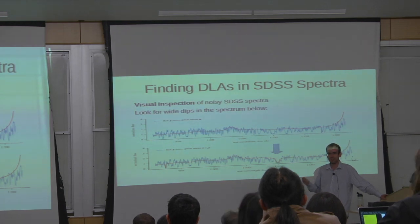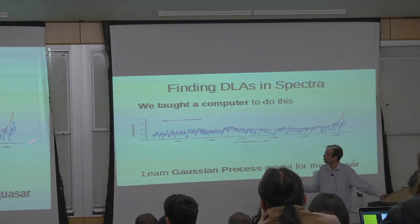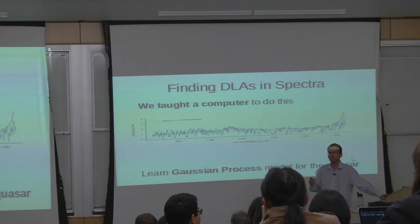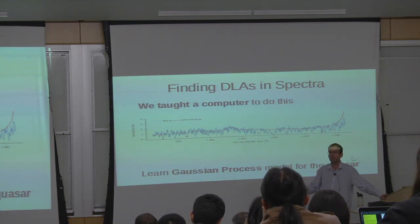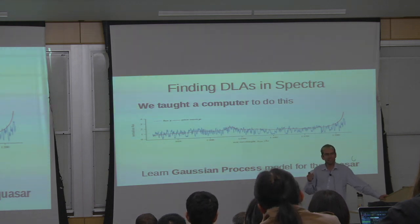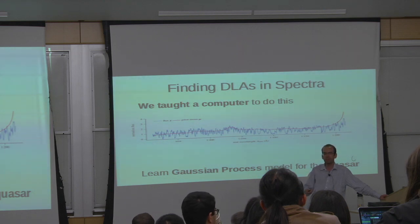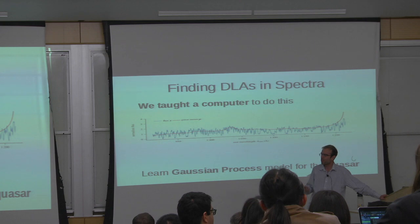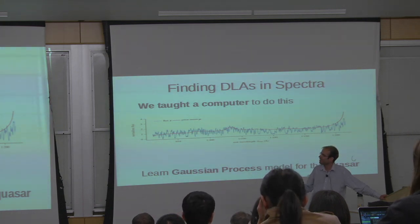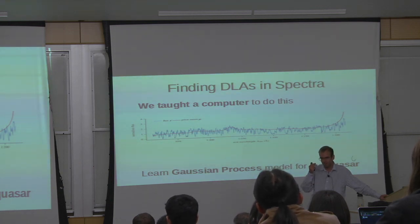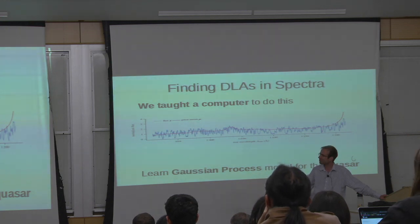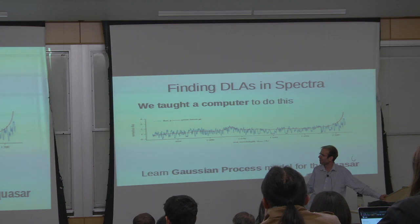We have a solution to doing tedious and repetitive tasks — teach a computer to do it for us. Some years ago we taught a computer a Gaussian process model for the quasar and then used that machine learning model to work out if there's something in the quasar other than the standard quasar model. I'm not going to explain Gaussian processes because the last two or three colloquia have explained them multiple times.